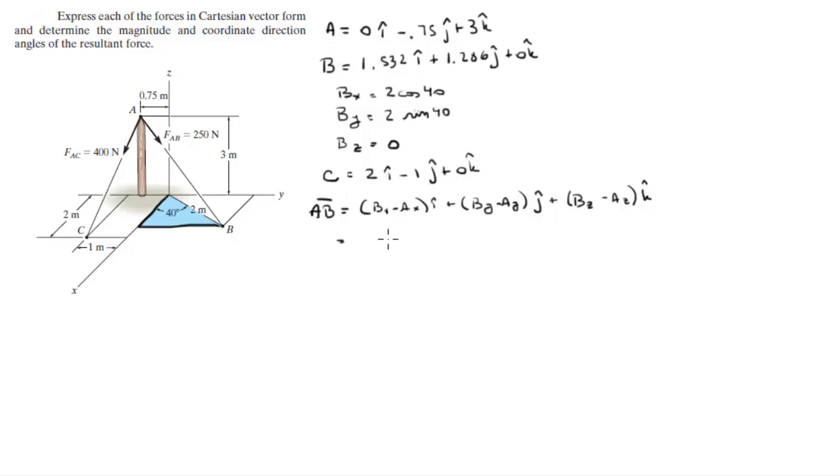you're going to get that this vector is equal to 1.532i plus 2.036j minus 3k and this is vector AB.